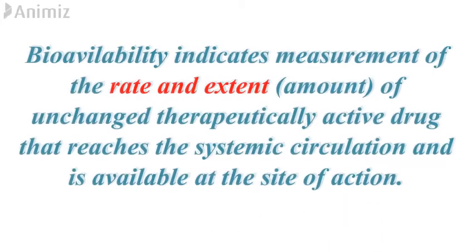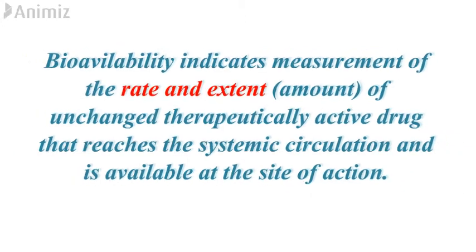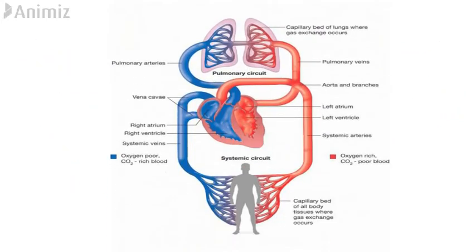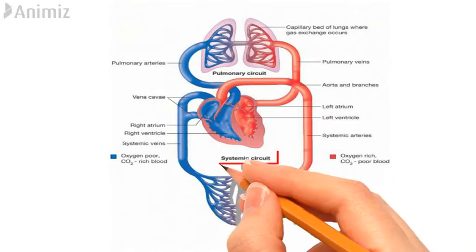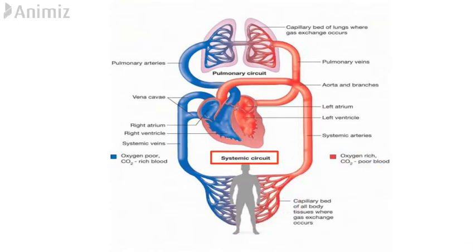Bioavailability indicates the measurement of the rate and extent — which is the amount — of unchanged therapeutic drug that reaches the systemic circulation and is available at the site of action. There are two types of blood circulation in the body: pulmonary circulation, in which deoxygenated blood comes out of the heart and goes to the lungs for oxygenation, and systemic circulation, in which oxygenated blood comes out of the heart and is distributed all over the body. We are talking about the distribution of drug in systemic circulation.